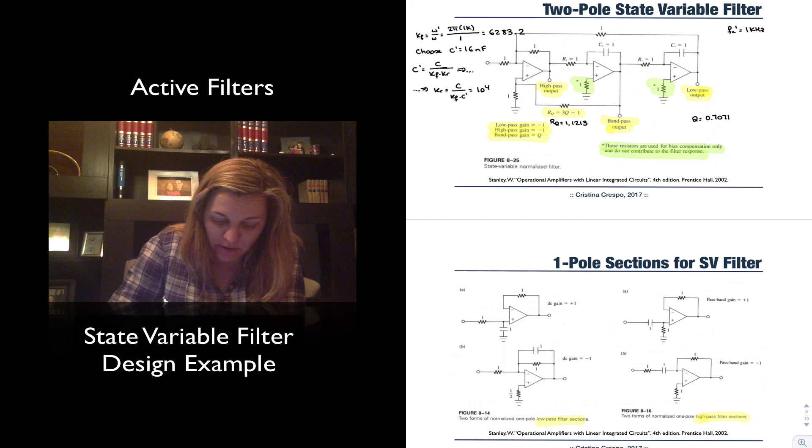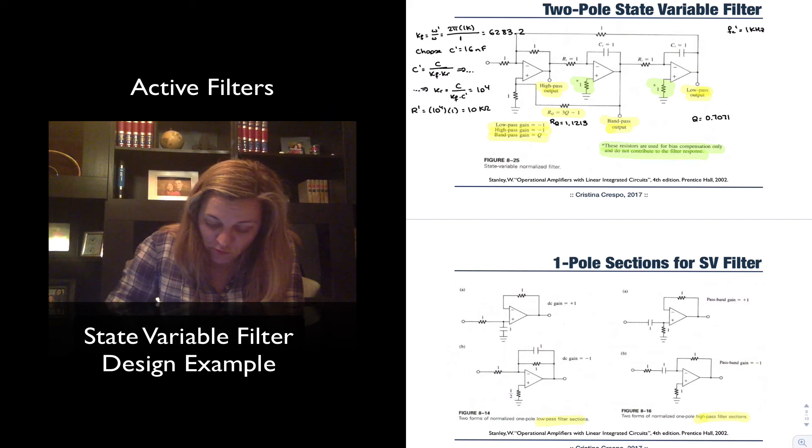So that means that my R prime will be equal to 10 to the 4 times R, which is 1, which is basically 10 kilo ohms. Except for my RQ, of course, which will be 10 to the 4 times 1.1213, and therefore equal to 11.213 kilo ohms.